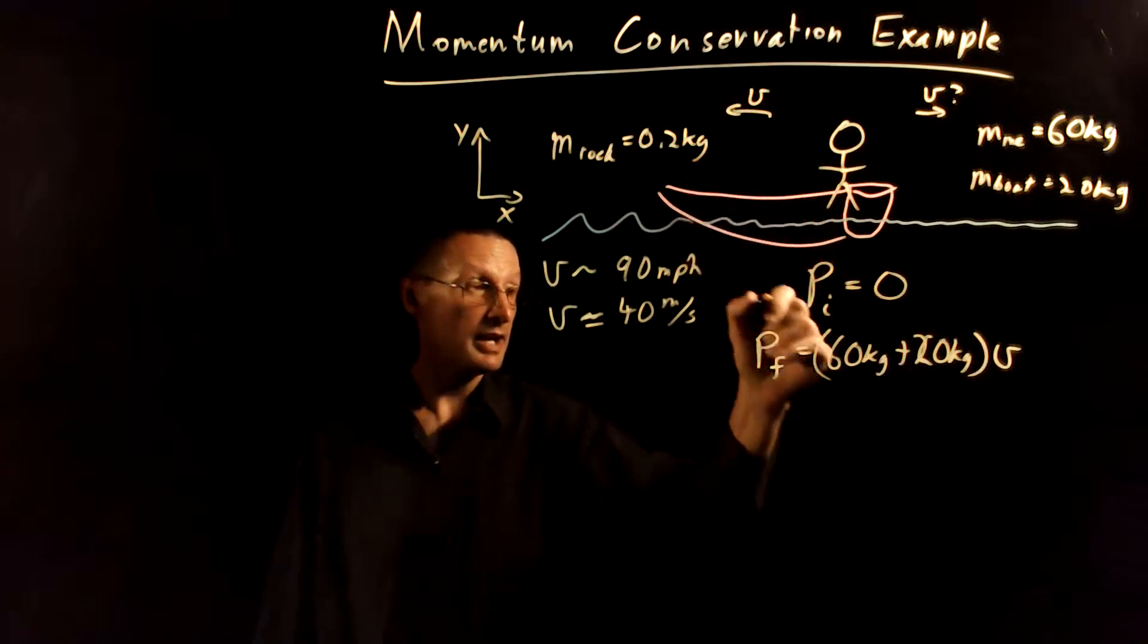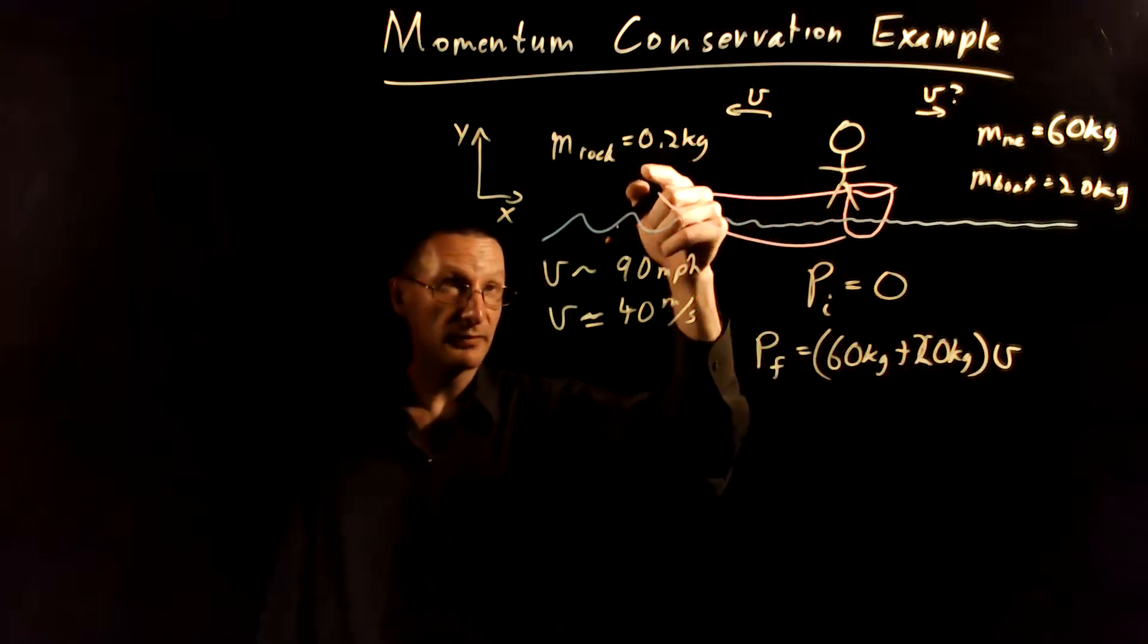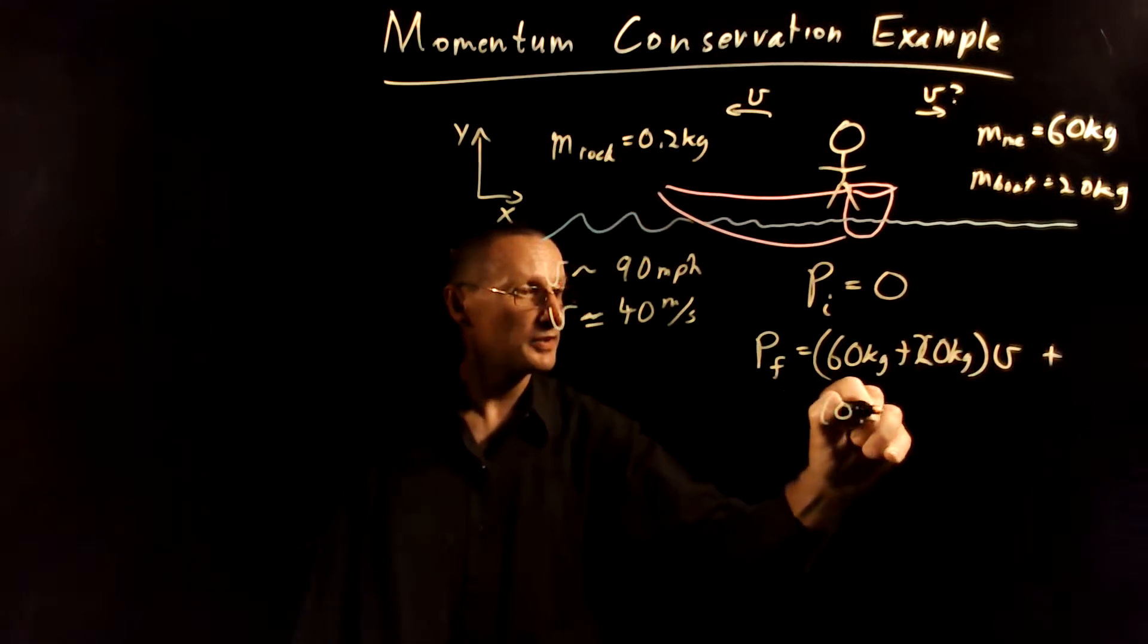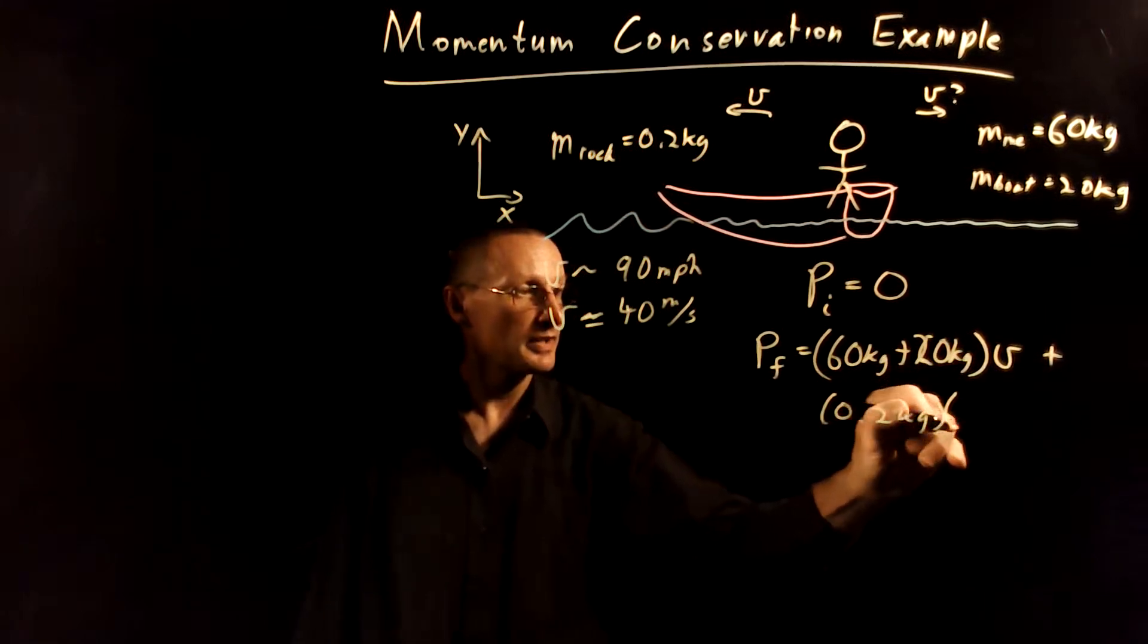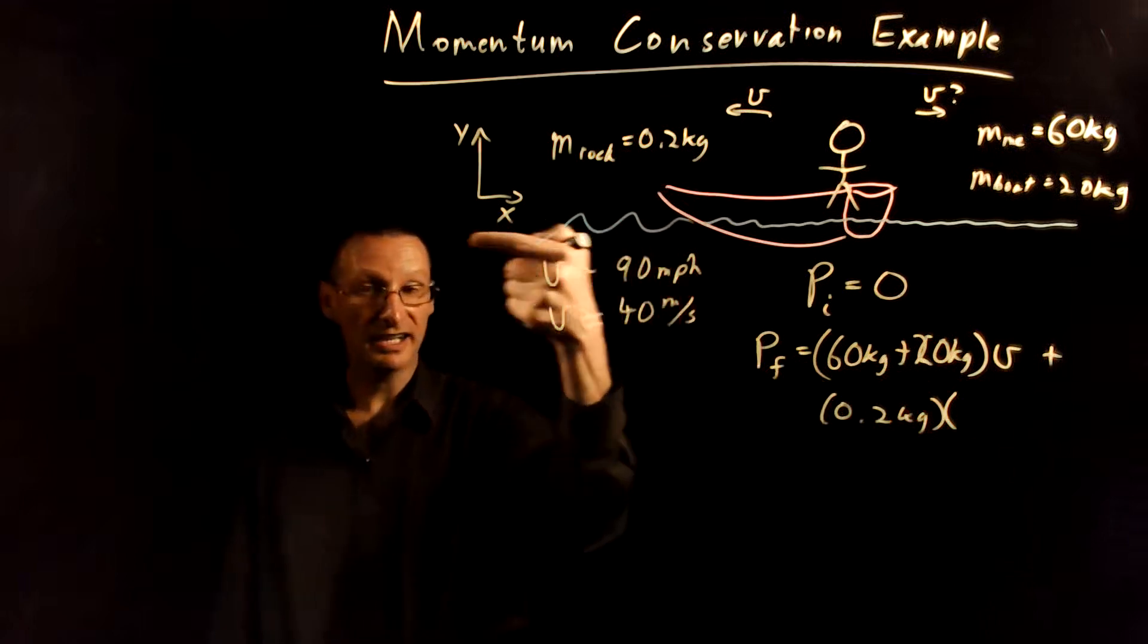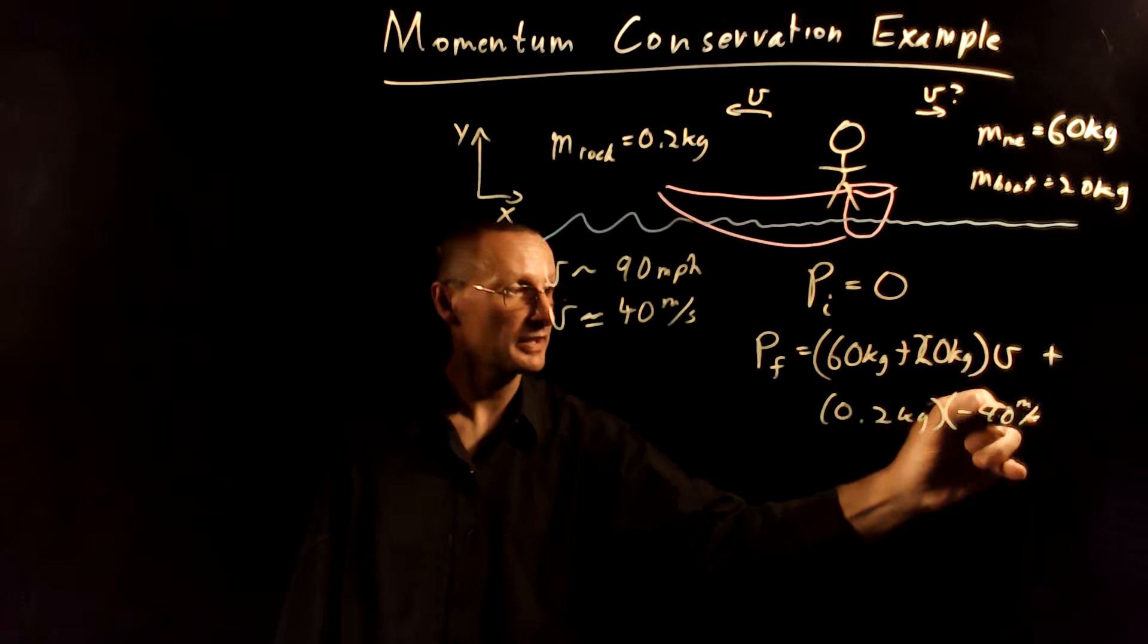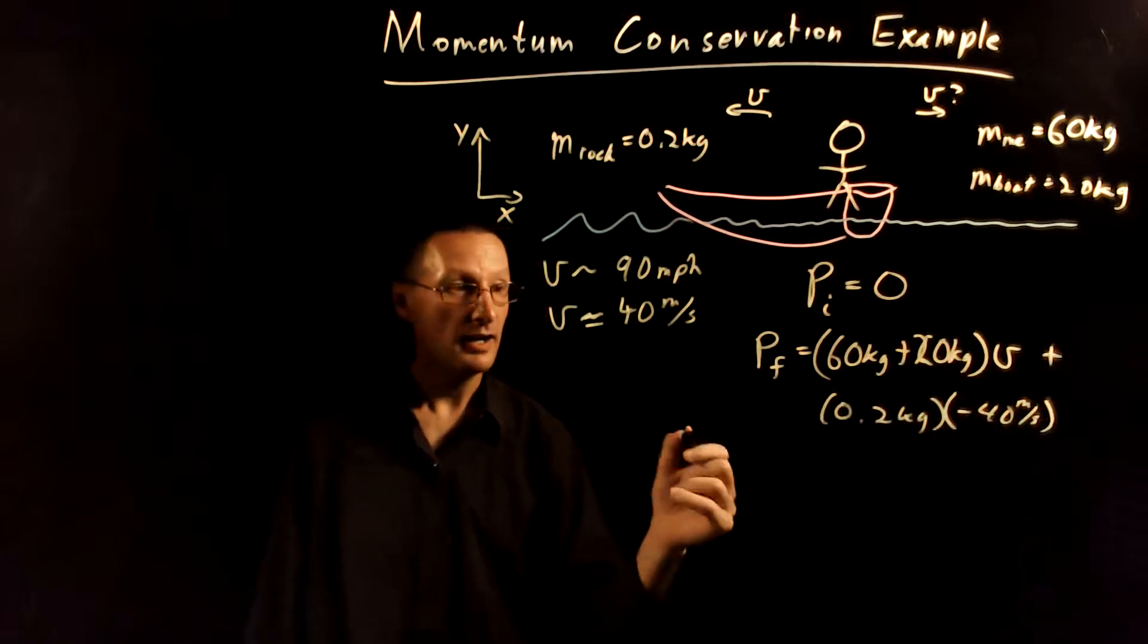And then we also have the momentum from the rock. That's going to be 0.2 kilograms times the velocity of the rock. The rock is going this way, so that's a negative 40 meters per second.